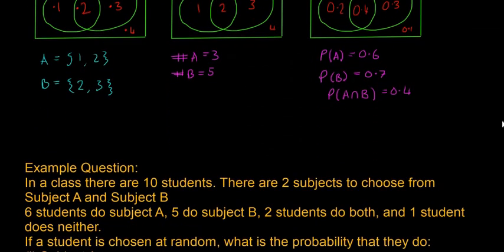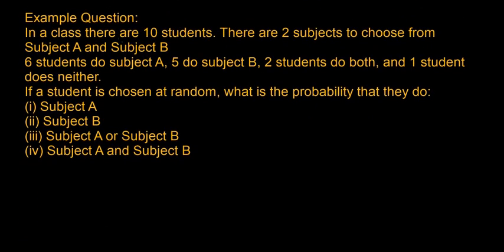Anyway, I'll go on to an example question so we can start to use this. So the questions are normally pretty similar to this. I'll read it out. In a class, there are 10 students, so that's U equals 10 in the universe. There are two subjects to choose from, subject A and subject B. Six students do subject A, five do subject B. Two students do both subjects, and one student does neither of the subjects.